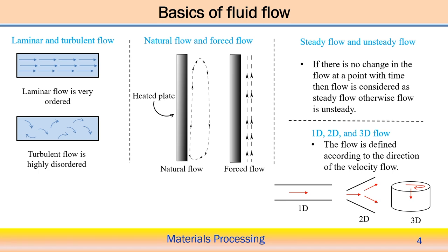Another variant is steady flow and unsteady flow. Steady flow is basically independent of time — if there is no change in flow at a particular point with respect to time, it is steady state flow. Unsteady flow varies with respect to time. Similarly, analysis can be done for one-dimensional, two-dimensional, and three-dimensional flow. One-dimensional analysis is defined according to the direction of velocity flow — only one direction. The second figure shows two-dimensional flow and the third figure indicates a three-dimensional flow field. All these kinds of analysis are associated with material processing technology.